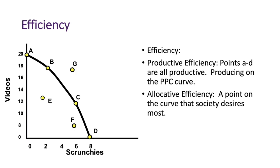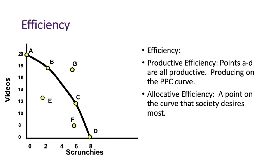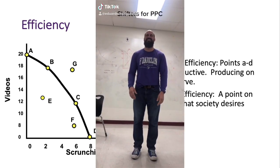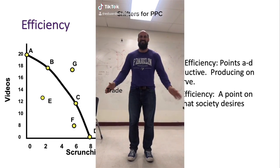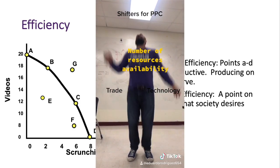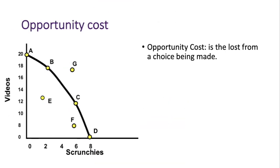If we all have long hair and are in desperate need of scrunchies, we would probably be producing at point D, which is eight scrunchies and zero videos. Now if we are all into TikTok videos and that's all we want to produce, our allocative efficiency would be point A.